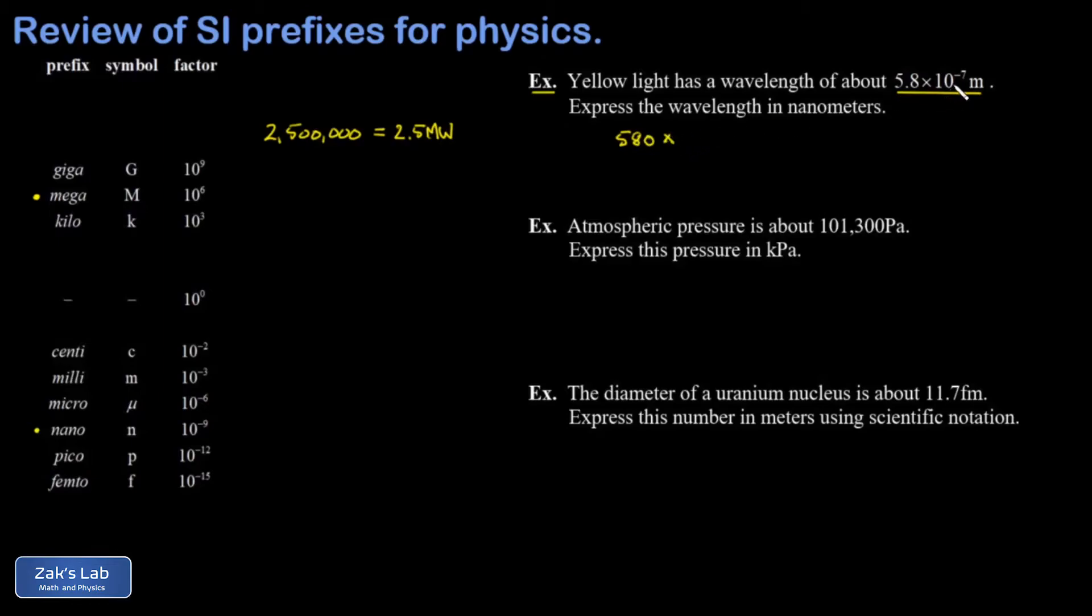So we multiply it by 100 and get 580. Again, we divide the power of 10 by 100. And I get 580 times 10 to the negative 9 meters. And the whole point, of course, is then to call 10 to the negative 9 meters a nanometer. And I get 580 nanometers for my answer.